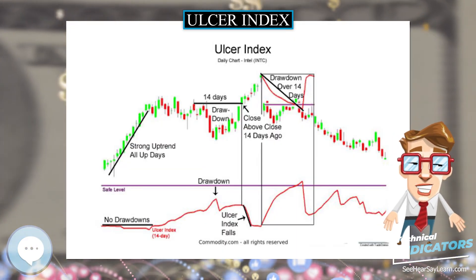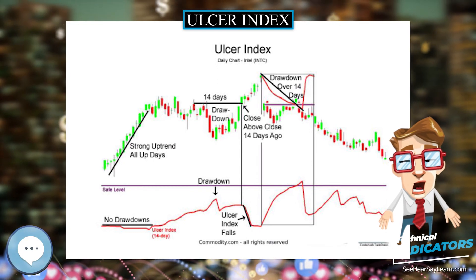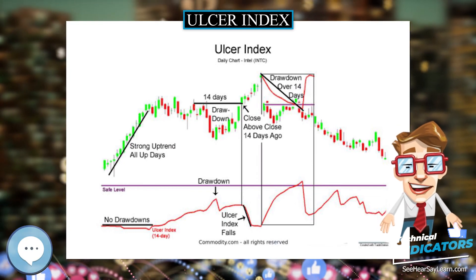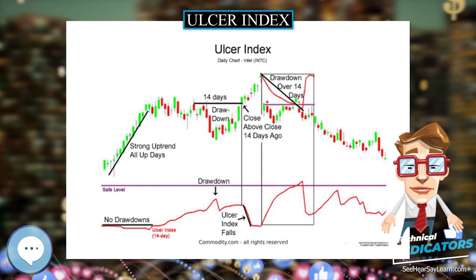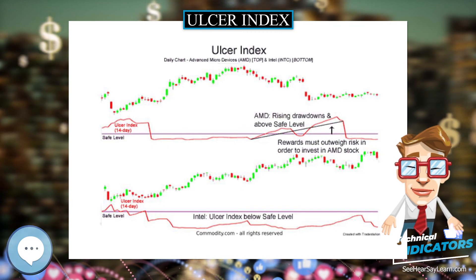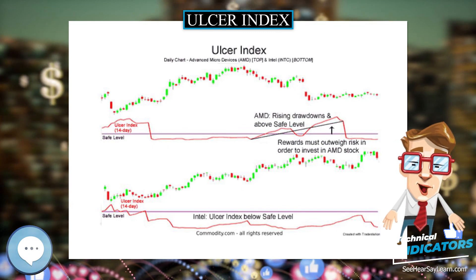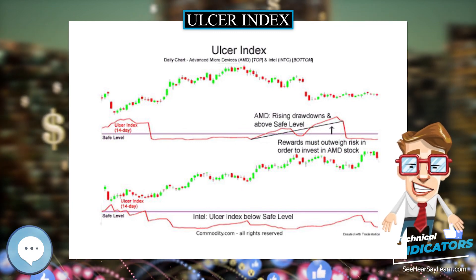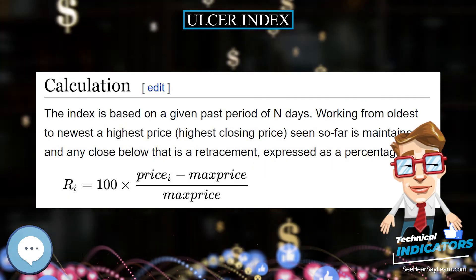The Ulcer Index can be used for one's chosen time frame or to compare volatility in different stocks. As with the Sharpe ratio, a higher value of UPI is better than a lower value — investors prefer more return for less risk.